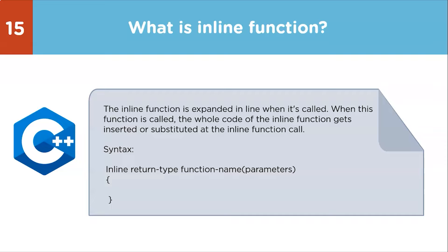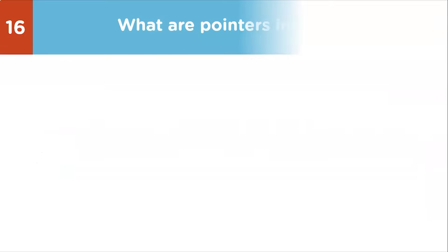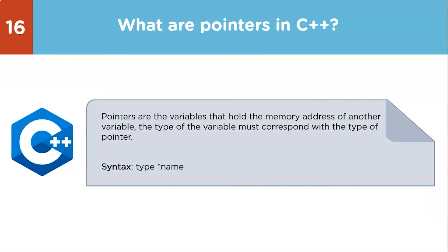Next question: what are pointers in C++? Pointers are variables that hold the memory address of another variable. The type of variable must correspond with the type of pointer — for example, a character-type pointer holds the address of a character-type variable, and the same applies for integer and other data types. The syntax uses the type, an asterisk, and the pointer name.